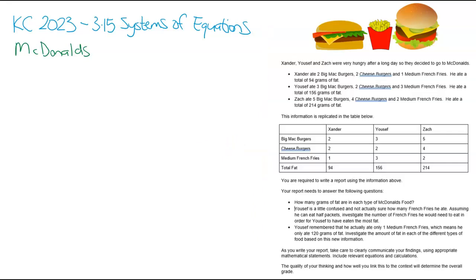We're going to start off by smashing out the achieved part of it. Scrolling down to the very bottom - how many grams of fat are in each type of McDonald's burger? We need to answer that for achieved. We don't need to be fancy with our algebra. We just need to do the bare bones, risk-free approach to make sure we guarantee our marks.